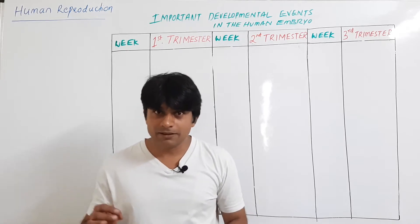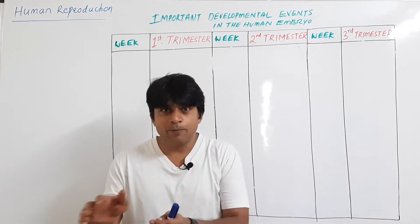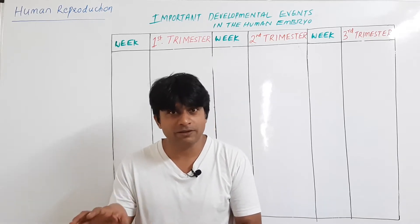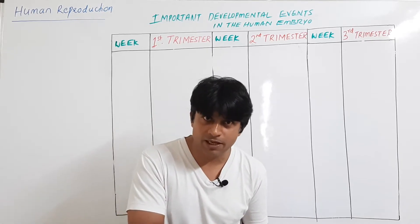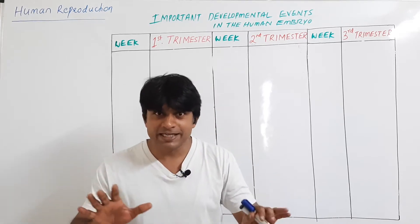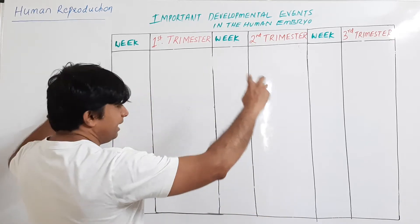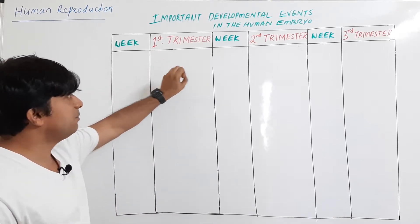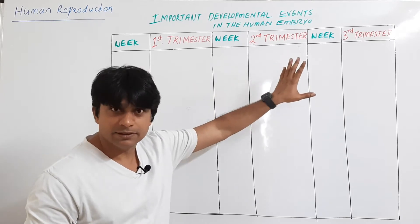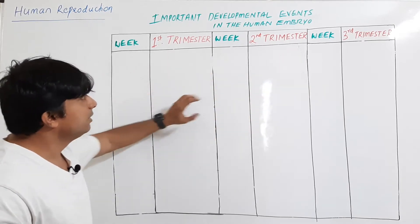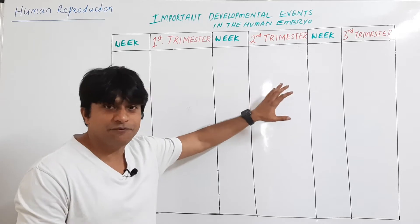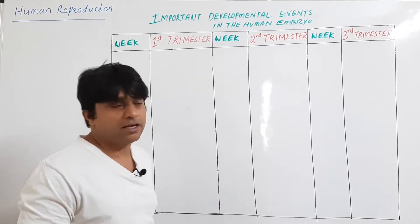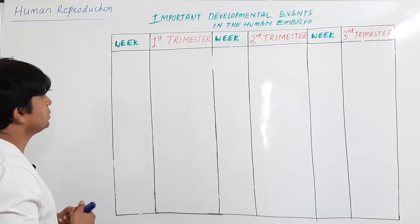There will be a little confusion among students about what happens during the second month, third month, and fourth month, because questions were asked previously on this. To make it very simple, I have made a tabular form in which I will mention the events that take place in the first, second, and third trimester — many in the first trimester and very few in the second and third — so that it is easy to remember.